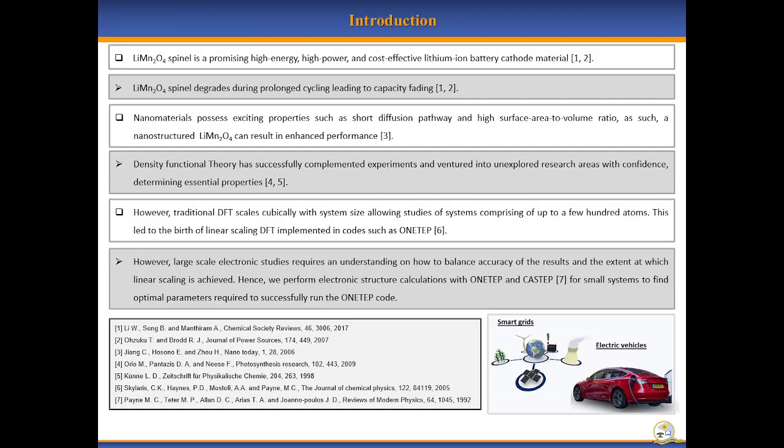Lithium manganese oxide spinel is one of the promising cathode materials in the search for high energy, high power, cost-effective and robust electrodes to improve the performance of lithium-ion batteries, particularly to sufficiently power electric vehicles and for efficient storage of fluctuating renewable energy. However, this material degrades during prolonged cycling leading to capacity fading which hinders commercialization. With the exciting properties of nanomaterials such as short diffusion pathways and high surface area to volume ratio, a nanostructured lithium manganese oxide spinel can be the desired high energy, high power, and affordable cathode material for lithium-ion batteries.